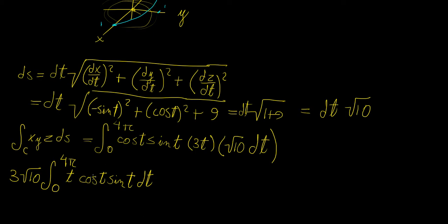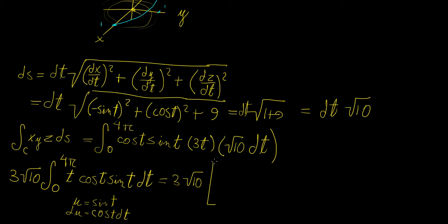Now we need to use integration by parts. We can do something smart here: let u = sine t, so that du = cosine t dt. Using integration by parts, the first term is t times the integral of cosine t · sine t dt. Recognizing that cosine t · sine t dt integrates to one-half sine squared t via substitution, the first term becomes t times one-half sine squared t.